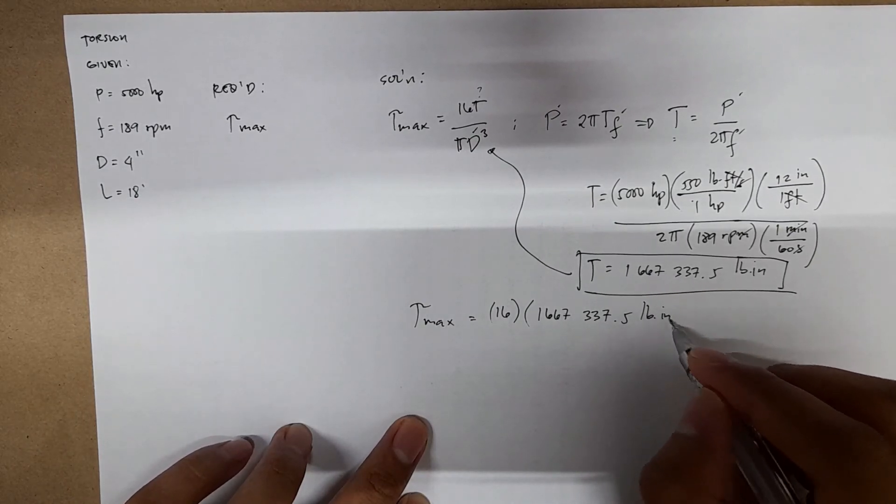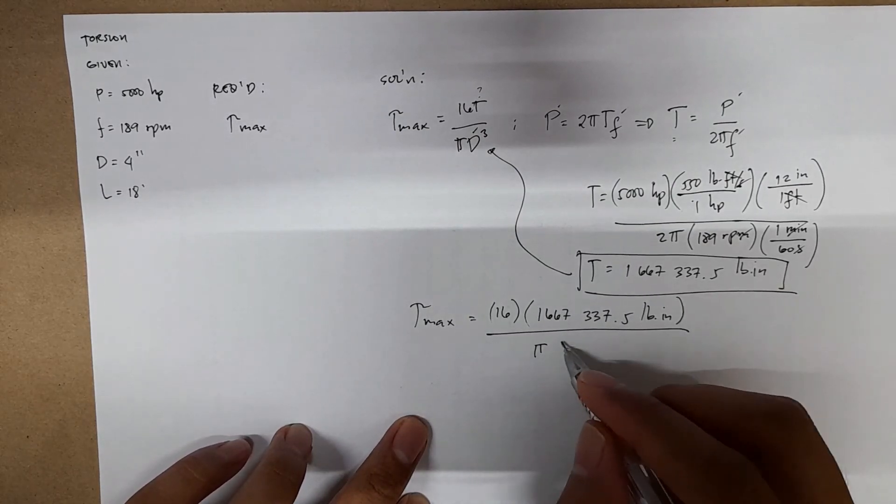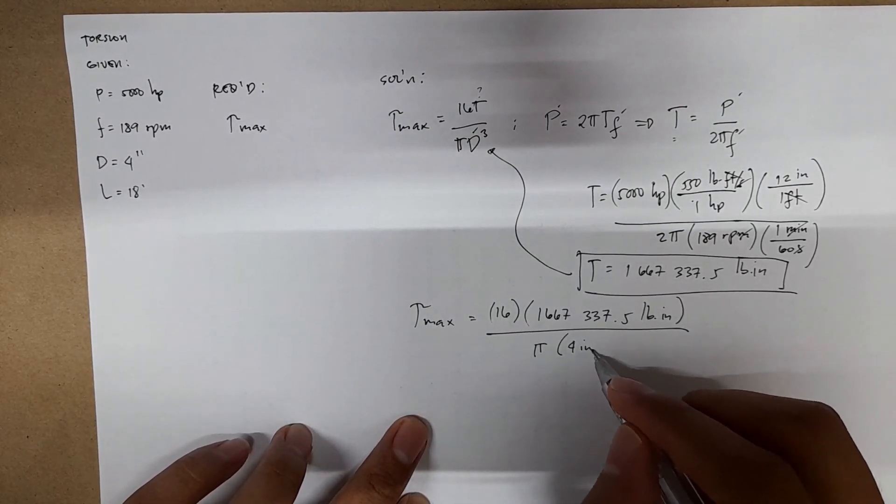Divided by pi, and then you have 4 inches cubed.